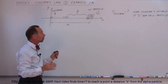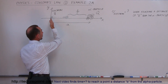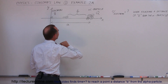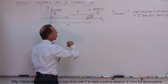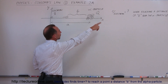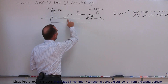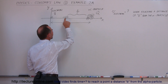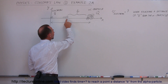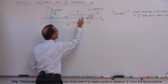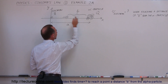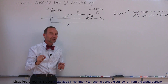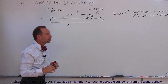Since they're oppositely charged, the electron is going to accelerate very quickly towards the alpha particle. The question is: what will be the velocity of the electron, starting at v equals zero, when it reaches a point a distance b away from the alpha particle?